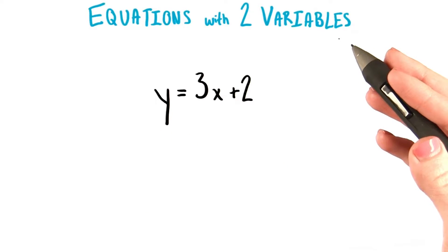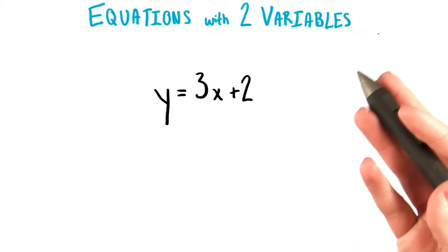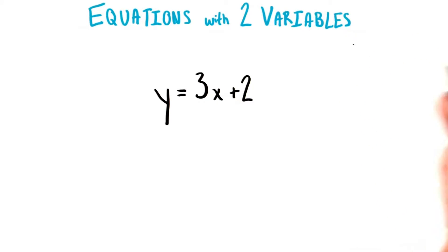Now, if equations in two variables can express input and output, cause and effect, or some sort of other relationship involving dependence, then it would seem like the two variables in the equation would each play a different role. Perhaps it's that one of these two variables needs to depend on the other.